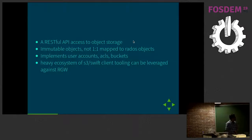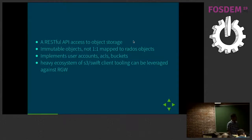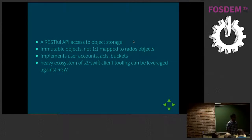You have S3 and Swift APIs being exposed, and objects are not exactly one-to-one mapped to Rados objects. Over the normal Rados objects, you have implementation of users, ACLs, buckets, and things like that. There's already a heavy ecosystem of Swift and S3 client tooling that can be leveraged, so you don't need to develop a third API — these APIs are good enough.